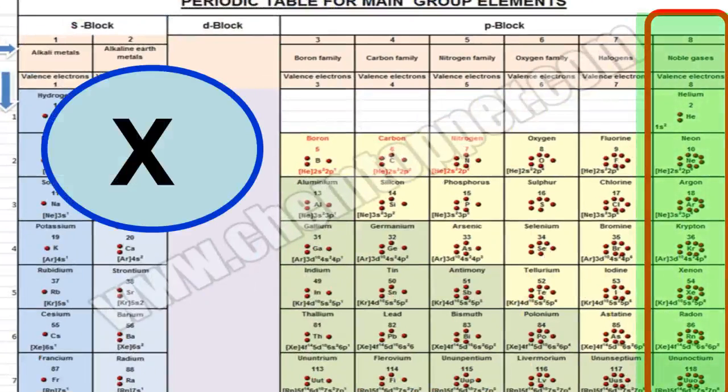Group 8 elements are represented with same Lewis dot representation. They have 8 electrons in their outermost shell. These 8 electrons are present as 4 pairs of electrons around the symbol of the element.